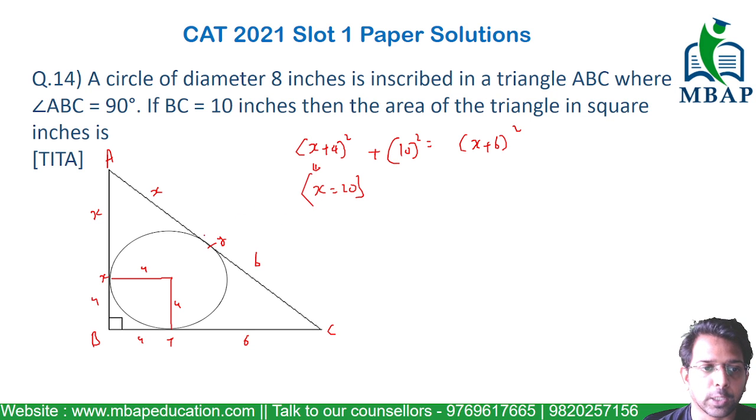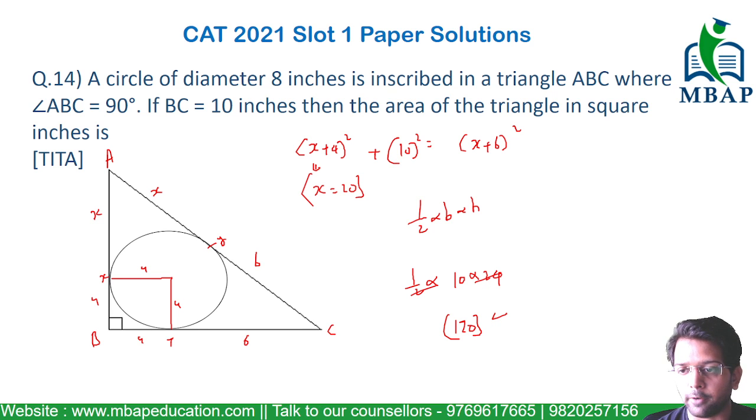The value of X is 20. Now, if the value of X is known, the area of a triangle will be given by half into base into height. Half is constant, base has been known to you, 6 plus 4 is 10, and height is 20 plus 4, which is 24. So, this will be 12 times 10, the answer will be straightforward, 120 square inches to be the final answer for this area of the triangle.